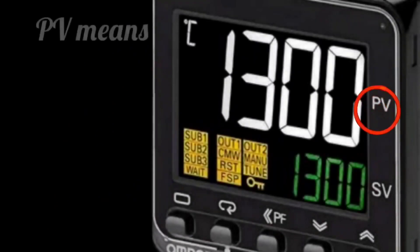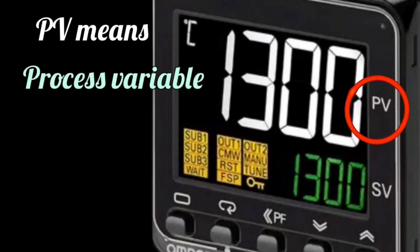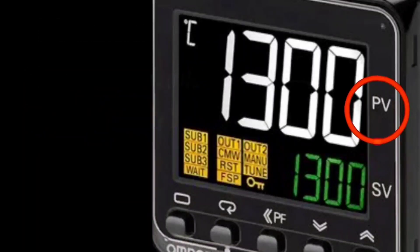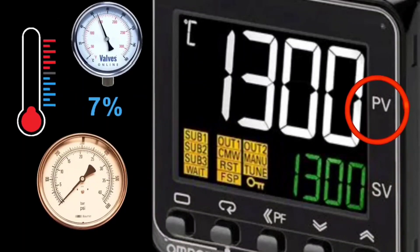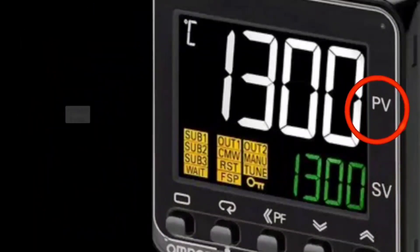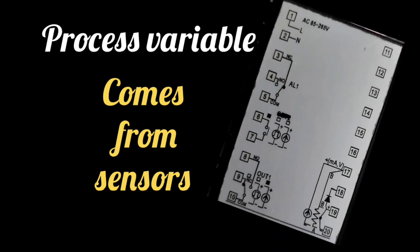PV means process variable or process value. This is the present value of pressure, temperature, or whatever has to be controlled. The process variable is obtained from sensors, and sensors are connected according to the connection diagram in the PID controller.